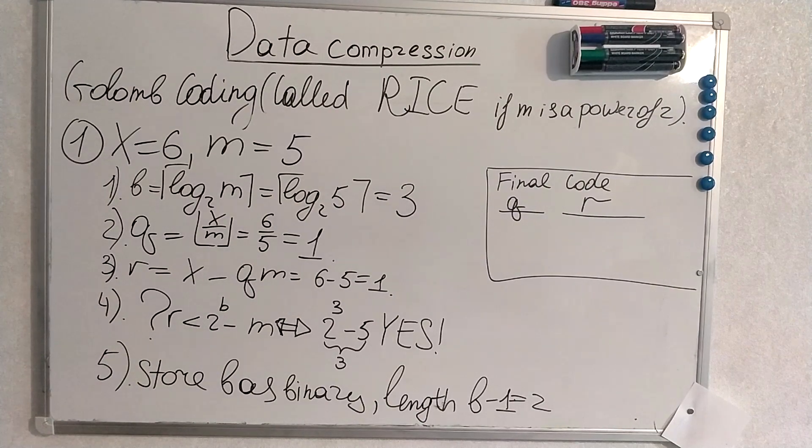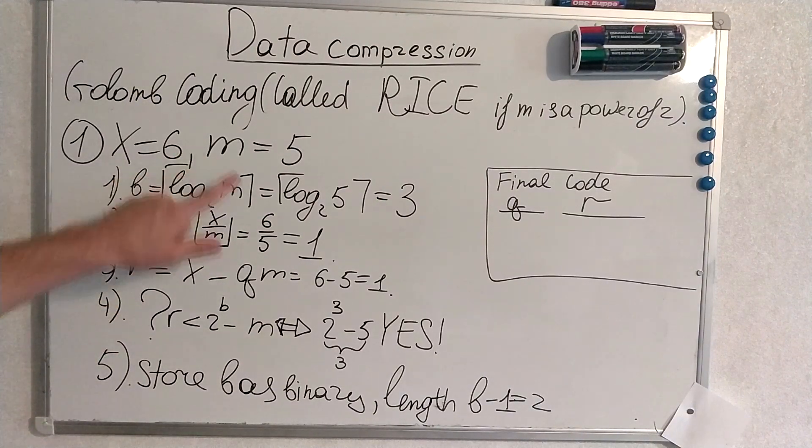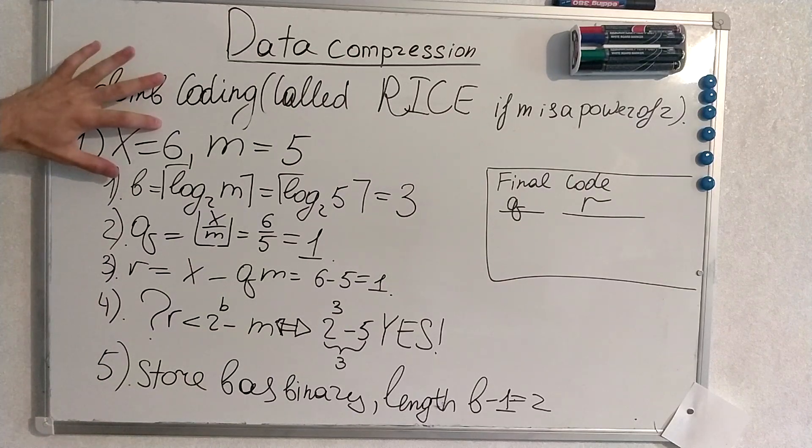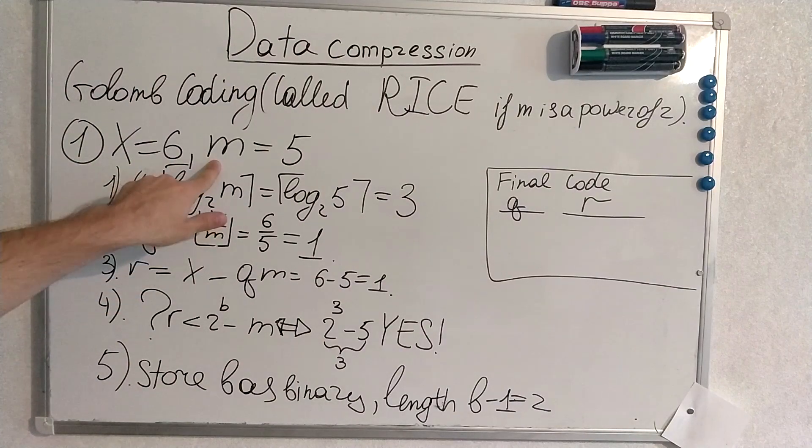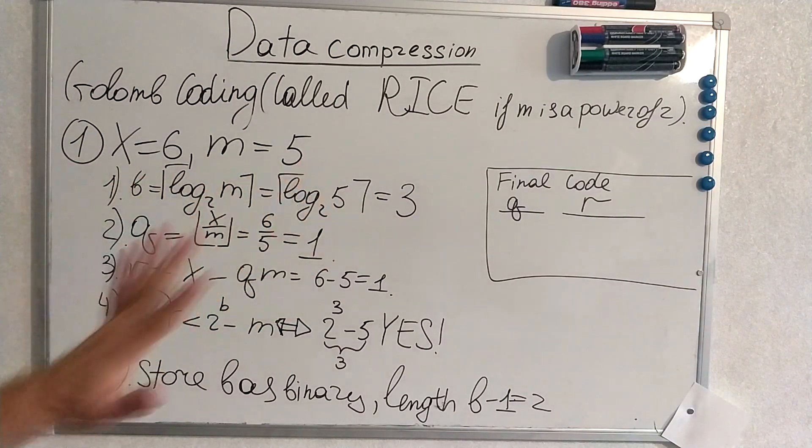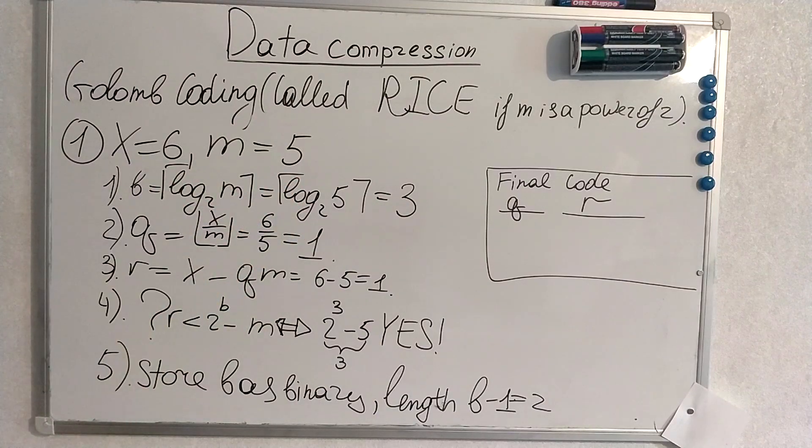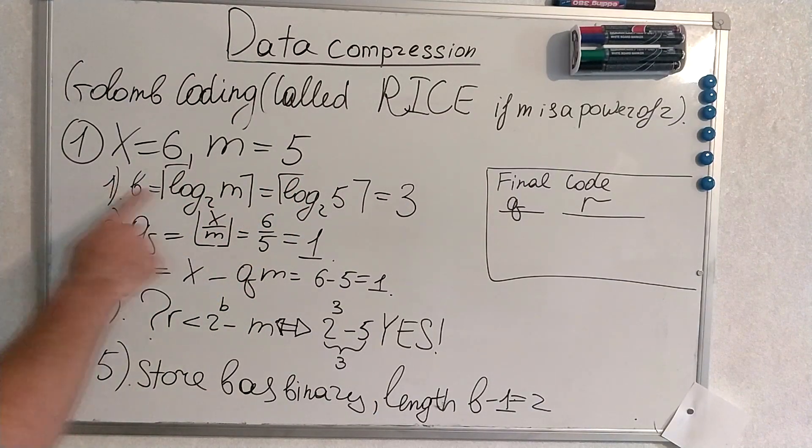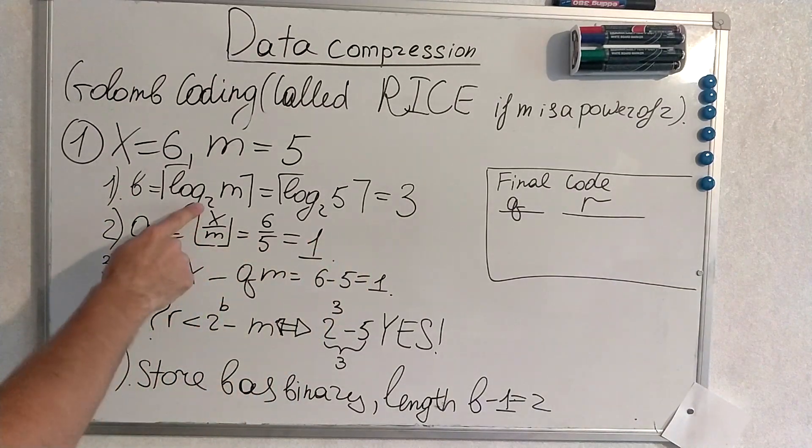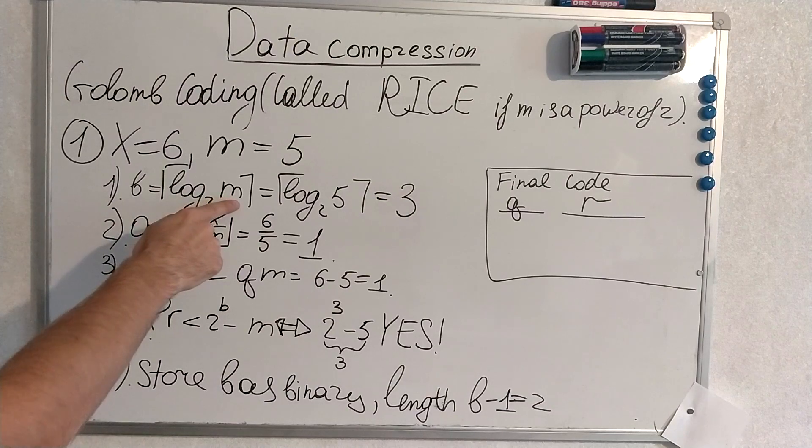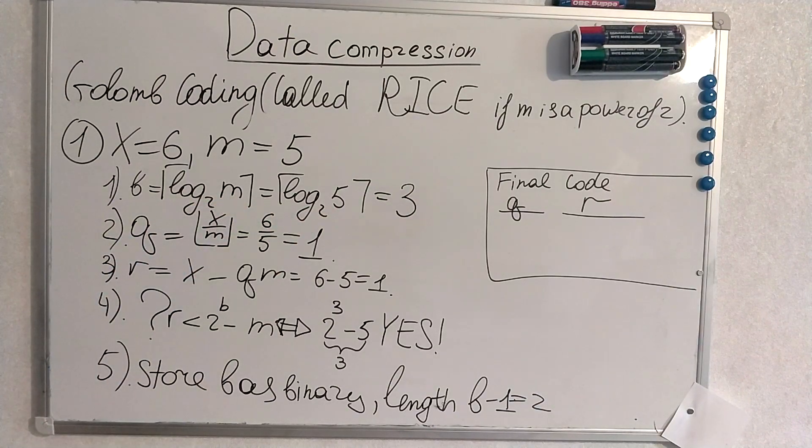First ramification of the algorithm when the reminder inequality holds. This is step by step. Our number we encode is 6, and m is 5. We could have chosen any number for m. It's free parameter as I said. And we make these calculations. We calculate b. It will be 3, because log 2 from m where m is 5.